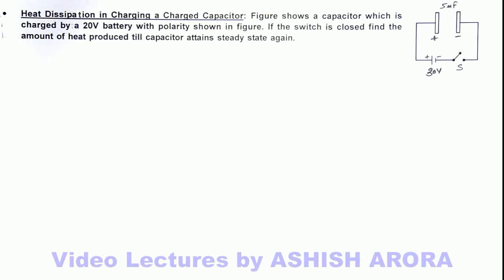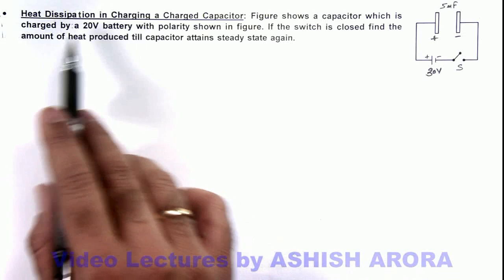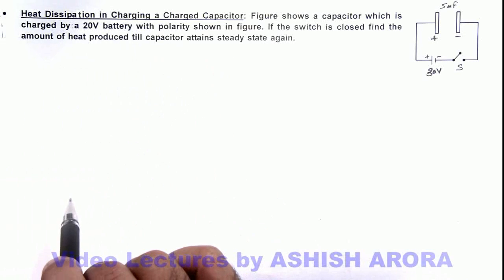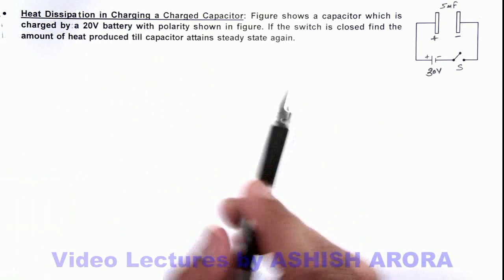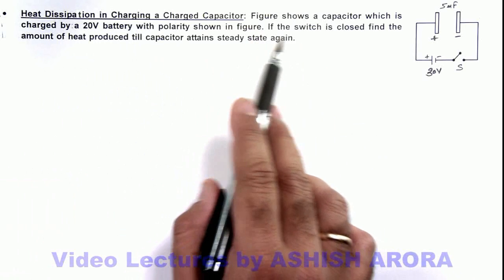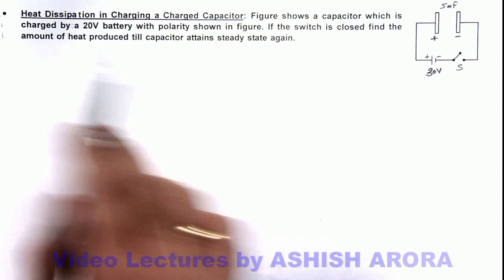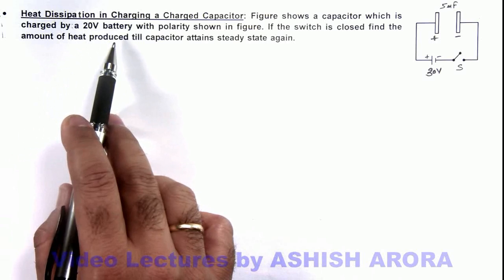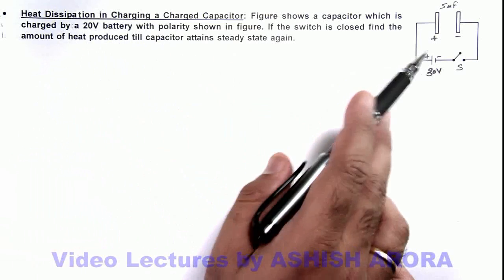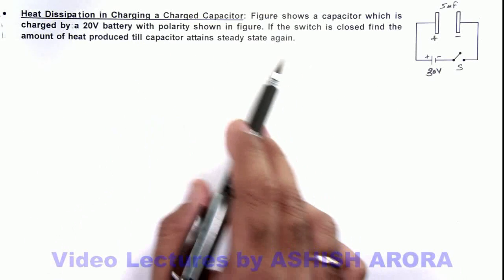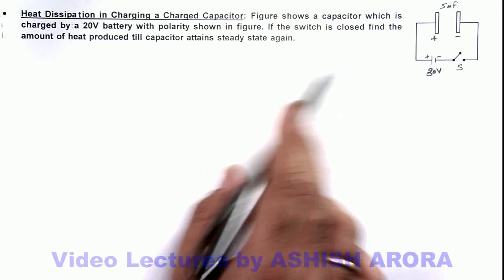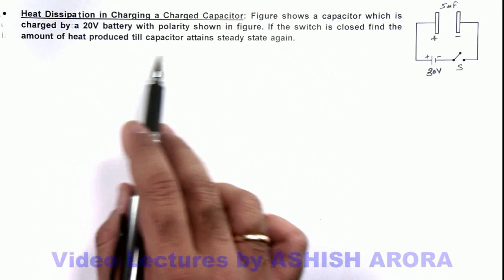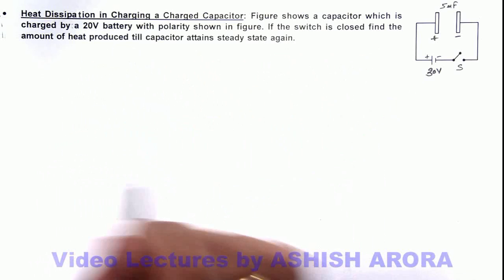Let us now study an illustration on heat dissipation in charging a charged capacitor. In this situation, the figure shows a capacitor which is charged by a 20 volt battery with polarity as shown in the figure. If the switch is closed, we are required to find the amount of heat produced till the capacitor attains steady state again.